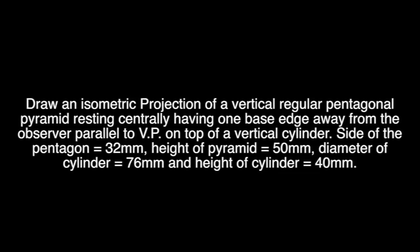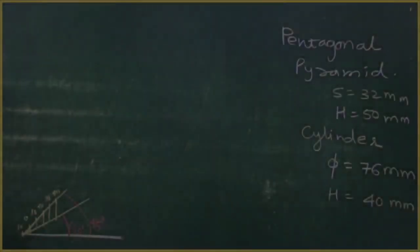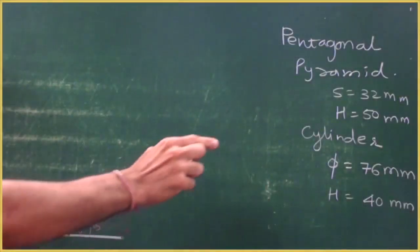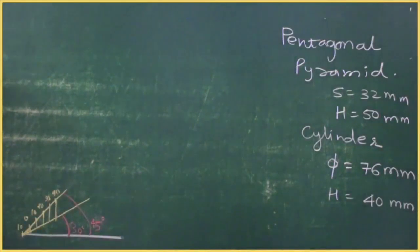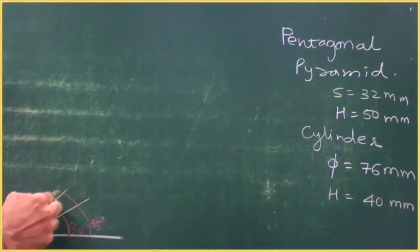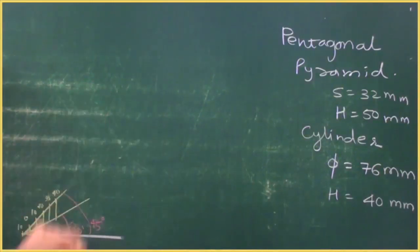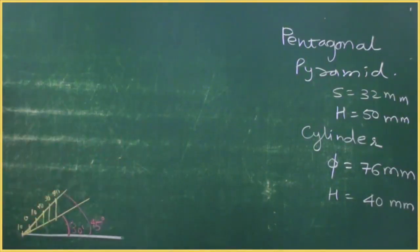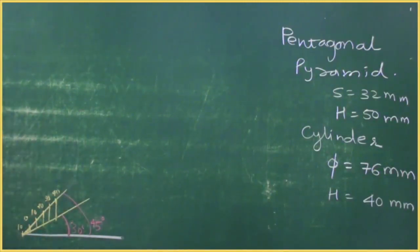Side of the pentagon is given 32 mm, height of the pyramid is 50 mm, diameter of the cylinder is 76 mm, and height of the cylinder is 40 mm. First we will start with the scale. The maximum length is 50, so I will draw 0 to 40 and 0 to 10. They have given diameter 76, so the radius would be 38.